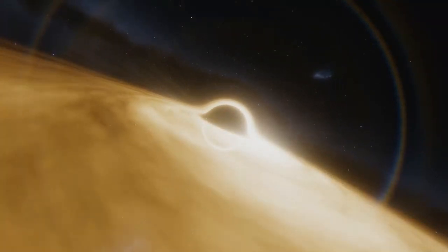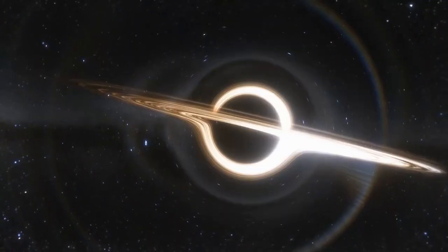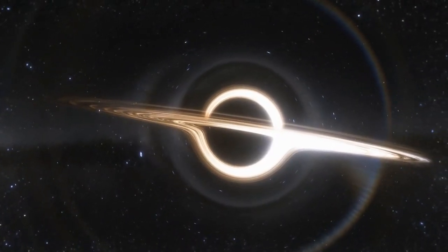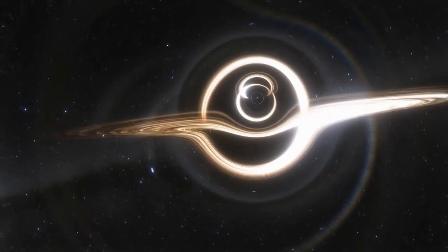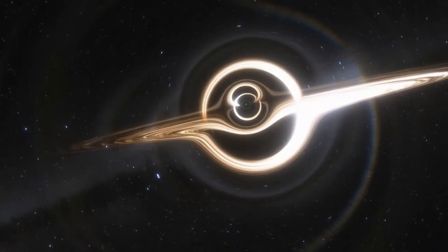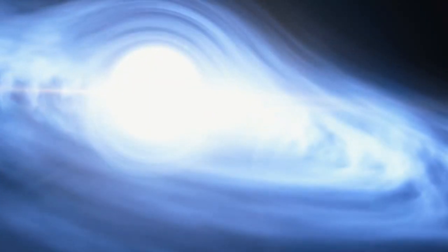Black holes formed by the collapse of individual stars are relatively small but incredibly dense. One of these objects packs more than three times the mass of the sun into the diameter of a city. This leads to a crazy amount of gravitational force pulling on objects around the object. Stellar black holes then consume the dust and gas from their surrounding galaxies, which keeps them growing in size.